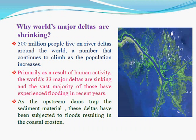Why are the world's major deltas shrinking? 500 million people live on river deltas around the world, a number that continues to climb as the population increases. The world's 33 major deltas are sinking, and the vast majority of those have experienced flooding in recent years.